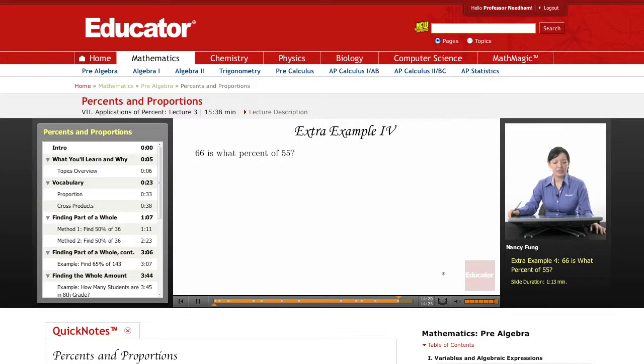66 is what percent of 55? Remember that the 'of' signals that the number following is your denominator. So I have 66 over 55.